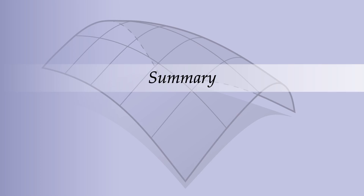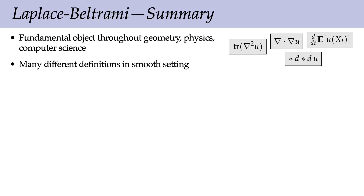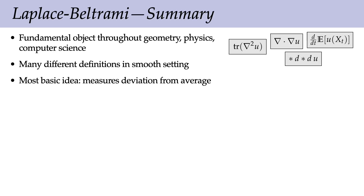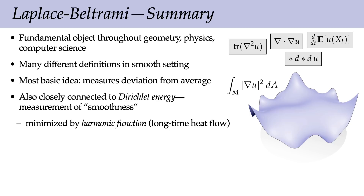To summarize, the Laplacian is a fundamental object used throughout geometry, physics, and computer science. We saw many different definitions in the smooth setting, but the most basic and intuitive idea is that the Laplacian of a function measures the deviation of that function from a local average. The Laplacian is closely connected to the Dirichlet energy—a basic measurement of smoothness—and this energy is minimized by long-time heat flow. When the heat flow becomes stationary, we have minimized that energy.